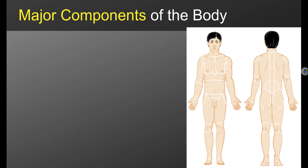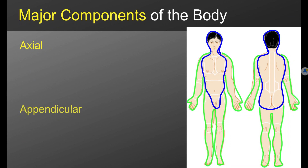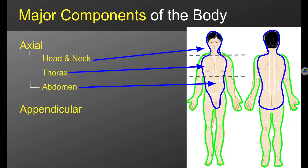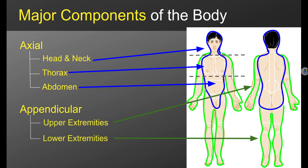There are two major components of the body: axial and appendicular. The axial component consists of the head and neck, the thorax, and the abdomen. The appendicular component consists of the upper extremities and the lower extremities.